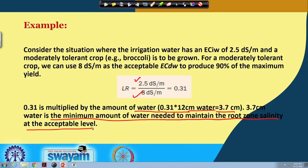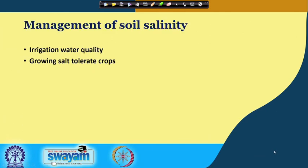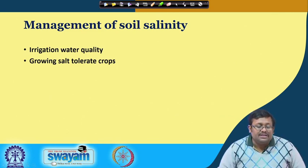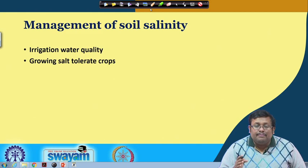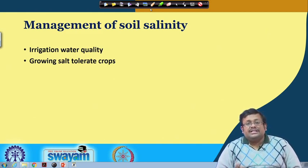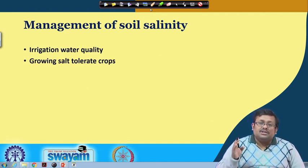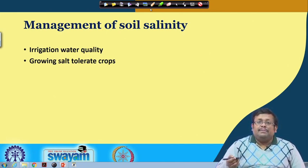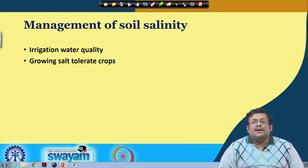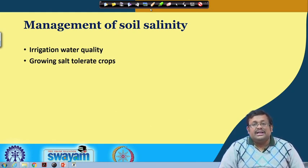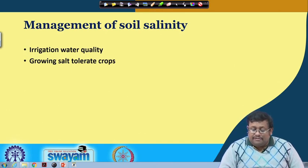This is how we calculate the leaching requirement. Moving ahead to managing soil salinity: providing good quality irrigation water is one of the major ways of controlling soil salinity. Irrigation water testing must be done before applying it to the soil, because sometimes irrigation water itself is saline. Split application of irrigation water is always better than ponding. Growing salt-tolerant crops is also very important and is the most effective way for getting productivity from problematic soils.